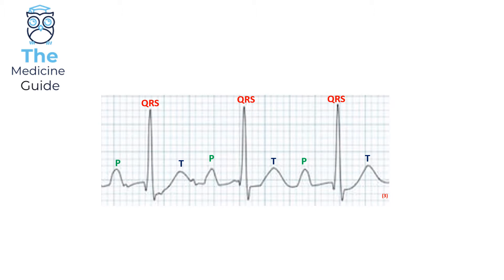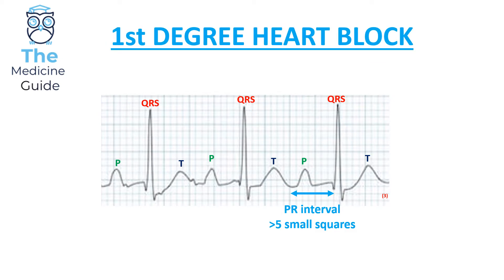Hopefully after looking at the ECG you would have noticed that the PR interval is prolonged. If you have a look at the example in the blue writing, we can see that the PR interval is more than five small squares. This is an example of first degree heart block. In first degree heart block, an ECG will present with a PR interval greater than five small squares.